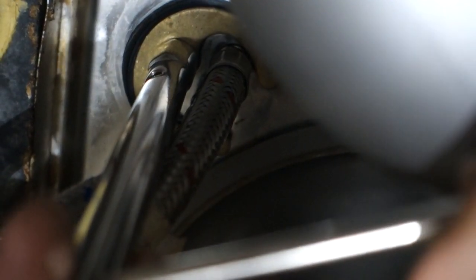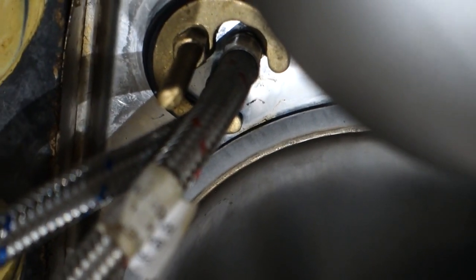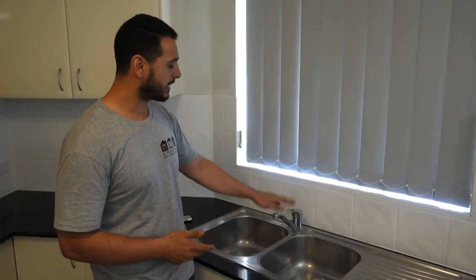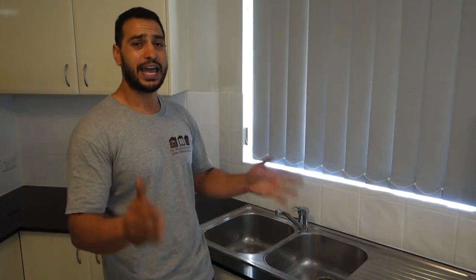So once we've got that on nice and tight we can then remove our tube spanner and we can test it out from the top. So once you've tightened it from underneath, jump back on top. Make sure you're happy with the positioning of the tap. Everything's on nice and tight and you're happy with it.